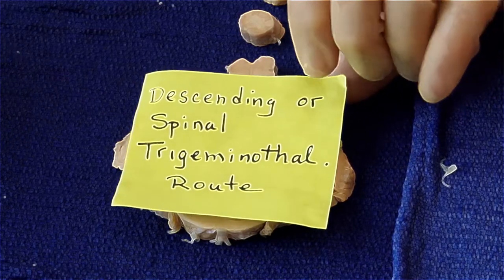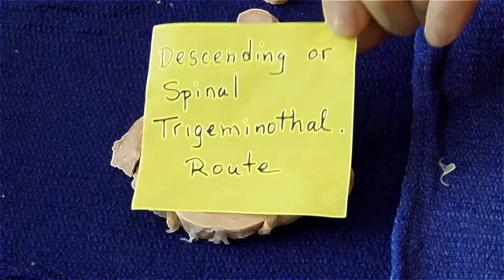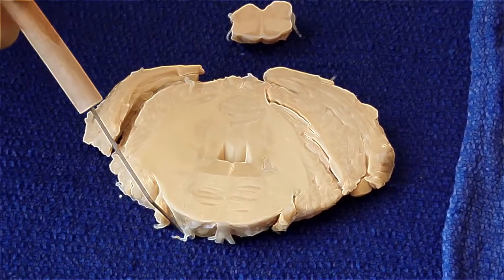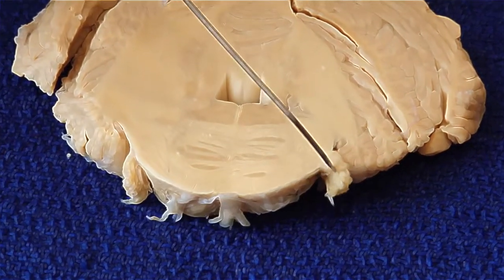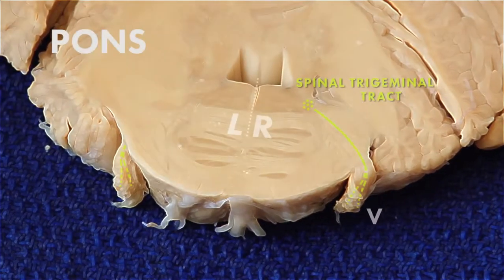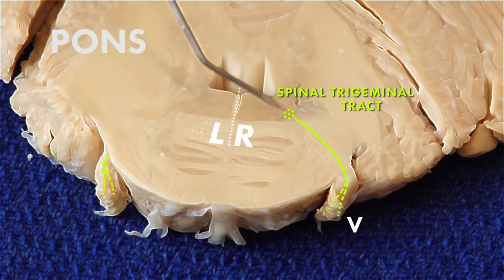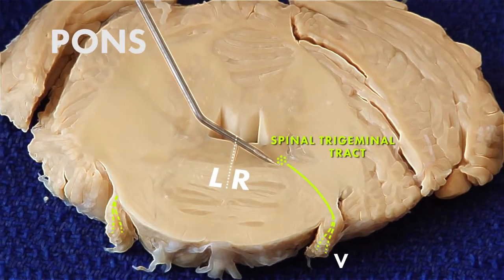Now we're going to trace the entrance of the trigeminal nerve that carries information for pain and temperature. So here we have, in the middle of the pons, the trigeminal nerve. So information coming in from the right trigeminal nerve enters into an area approximately here, and then those axons descend.